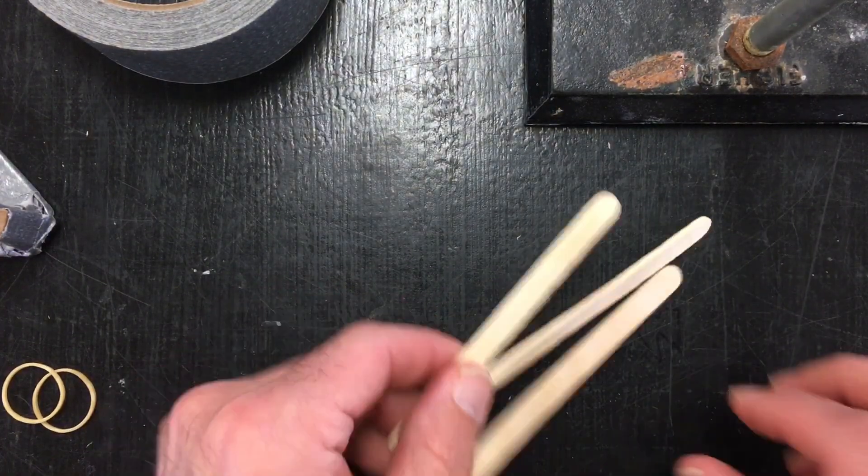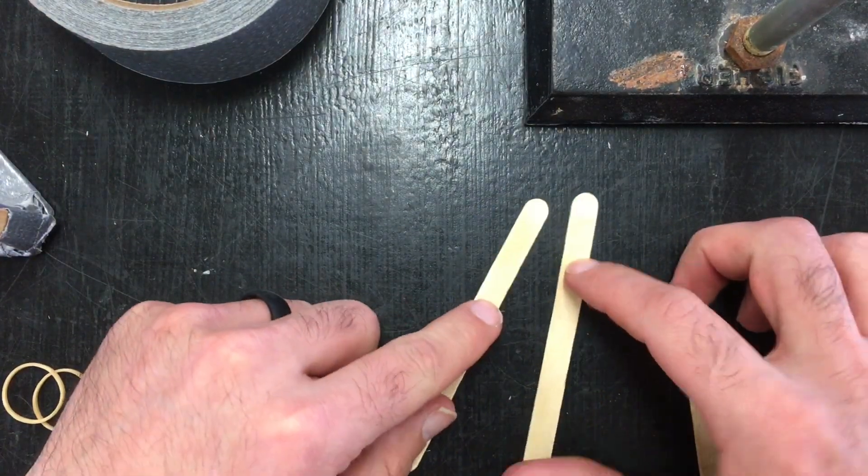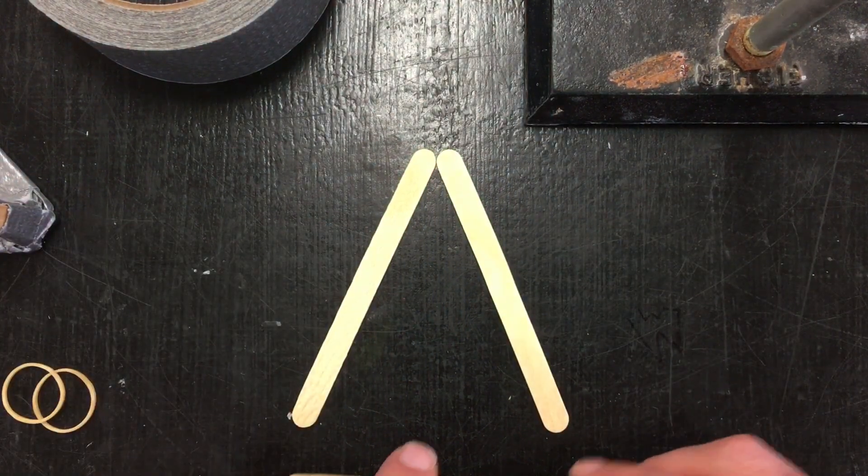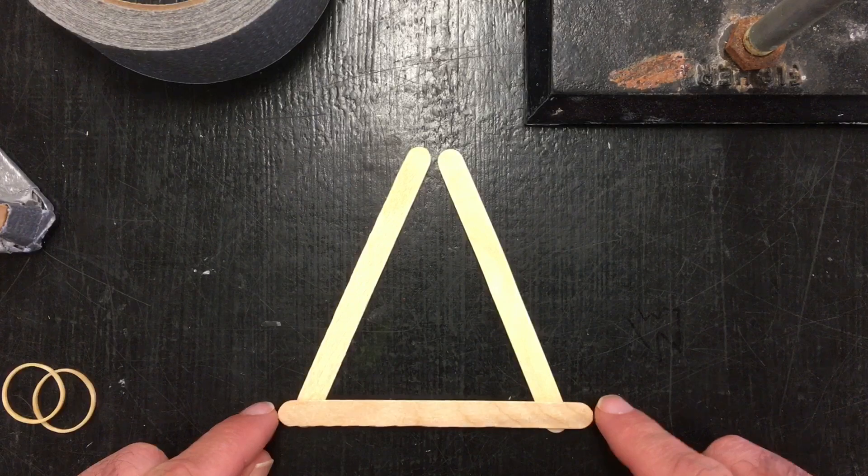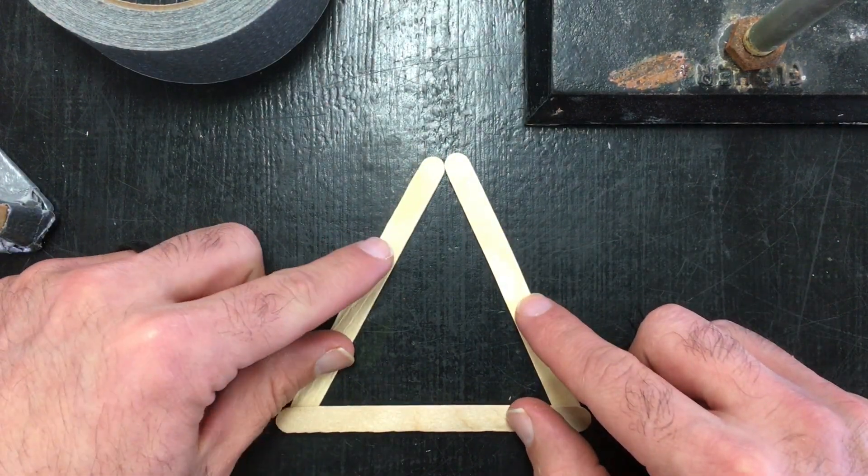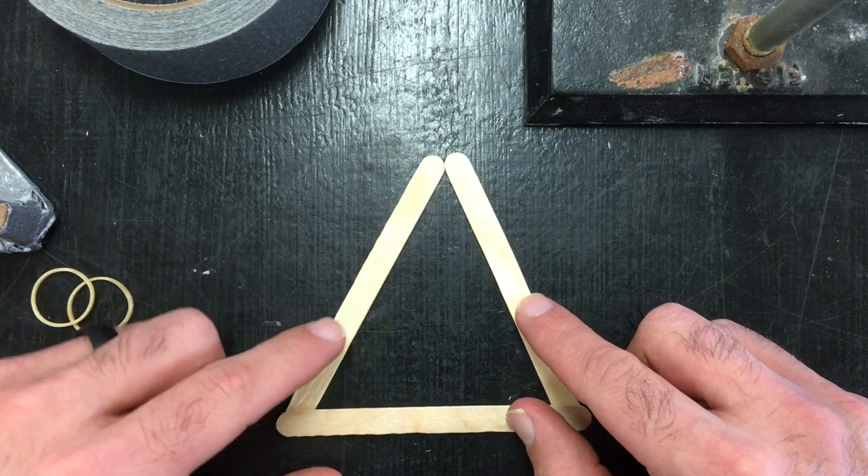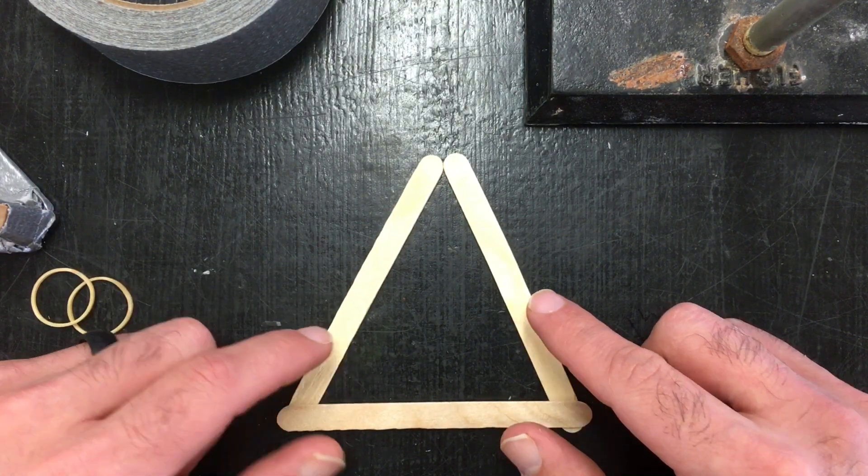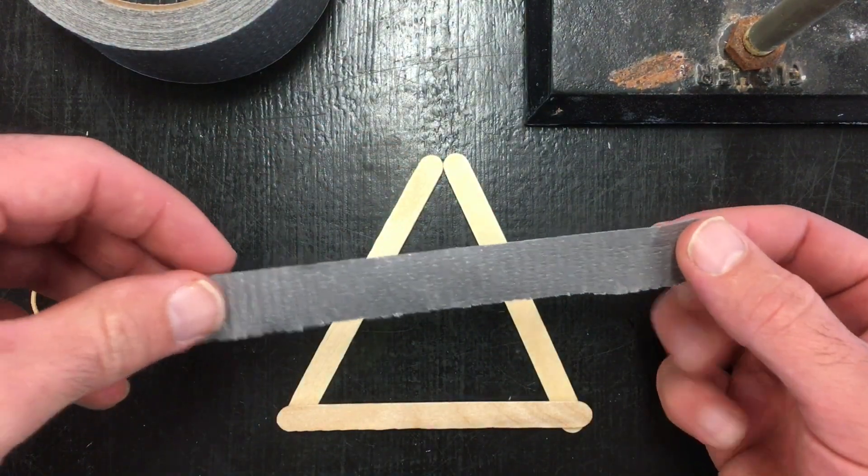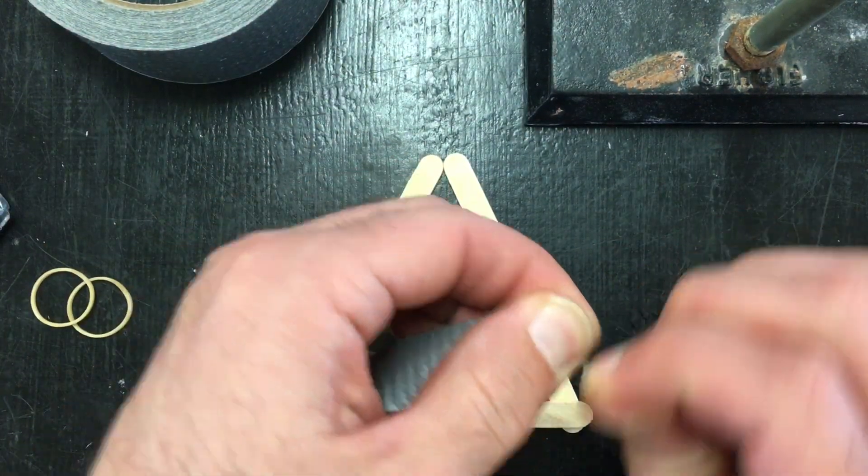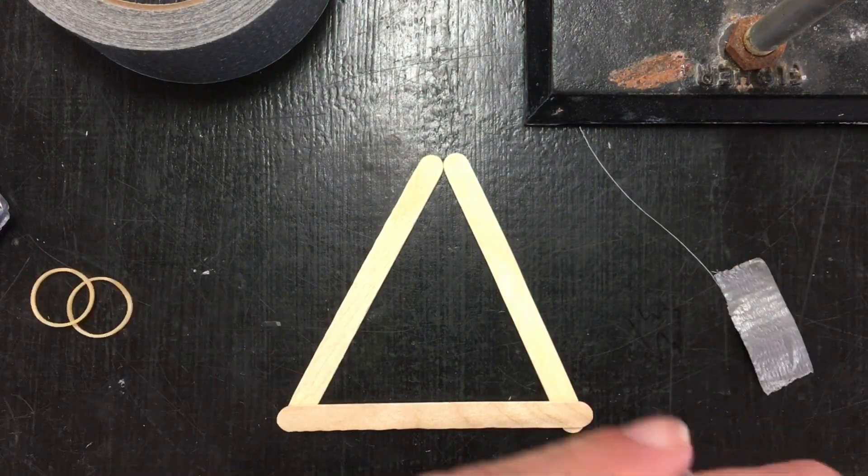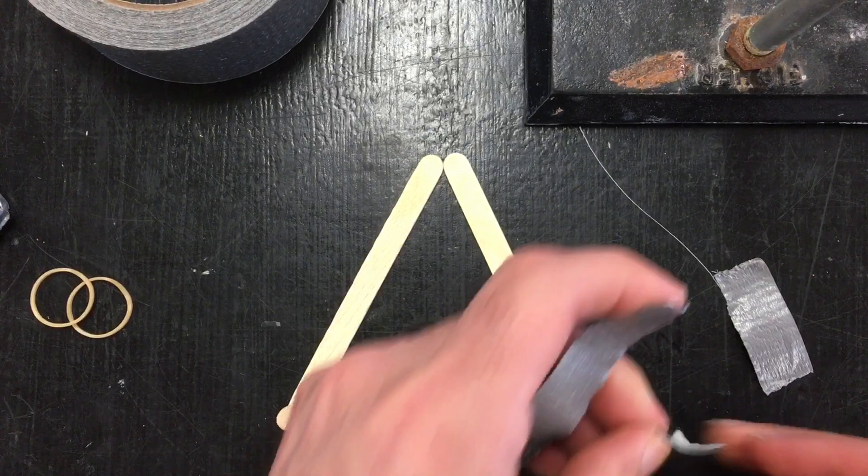First thing that you're going to want to do is take three popsicle sticks, set them up like an equilateral triangle, but the one that's closest to you, you're going to want to set on top of the others. What I like to do before I begin is take about 24 inches of duct tape, rip it in half lengthwise, and then rip those into small strips. I like to get about 20 smaller strips just to get started.